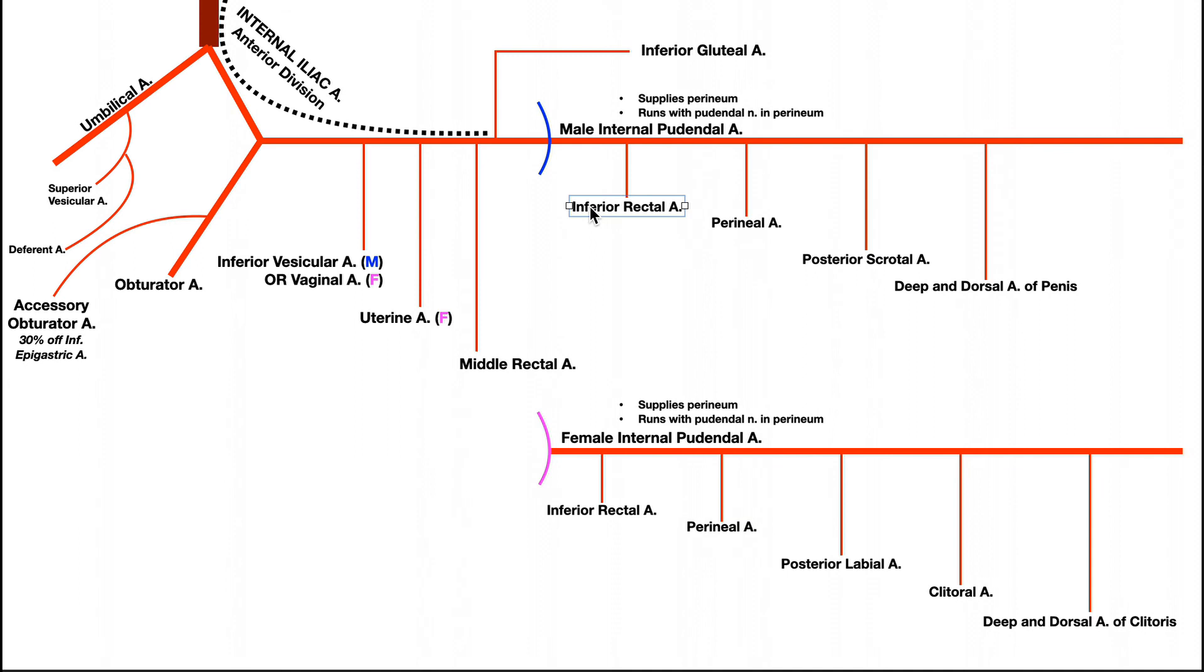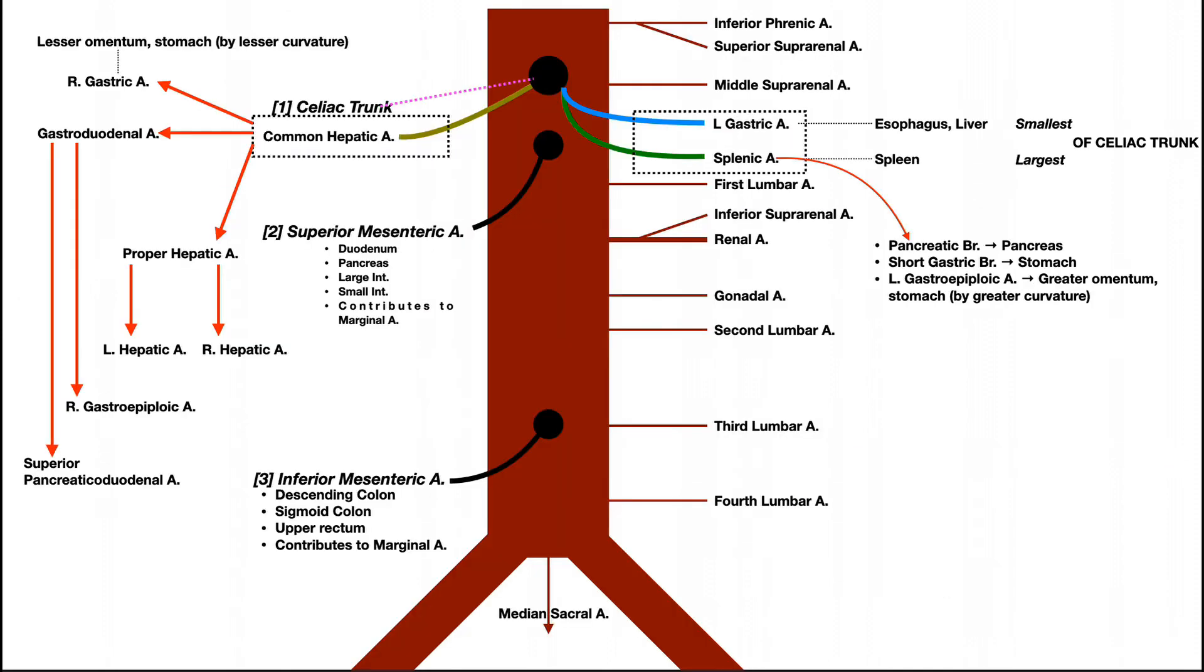If we're looking at the inferior rectal artery, this is really just supplying the distal or lower part of the rectum. And we've actually seen some other structures here. For example, we've seen the middle rectal artery which supplies the middle rectum. That branches off of the anterior division before it becomes the internal pudendal. And the superior rectal we've also seen before. We didn't name it as such, but it actually comes off of the inferior mesenteric artery. And this would actually be the superior rectal artery that supplies the upper or proximal part of the rectum.